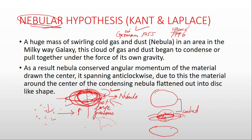Due to this bulge, the nebula became disc-shaped. The centrifugal force was creating a bulge outward in the equatorial zone, while the gravitational force was contracting it inwards at the poles. This cooling and contraction continued until a stage came when the centrifugal force became greater than the gravitational force, and as a result a gaseous ring was separated out.